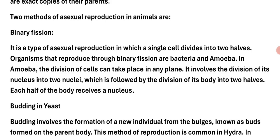Binary fission: it is a type of asexual reproduction in which a single cell divides into two halves. Organisms that reproduce through binary fission are bacteria and amoeba. In amoeba, the division of cells can take place in any plane. It involves the division of its nucleus into two nuclei, which is followed by the division of its body into two halves. Each half of the body receives a nucleus.